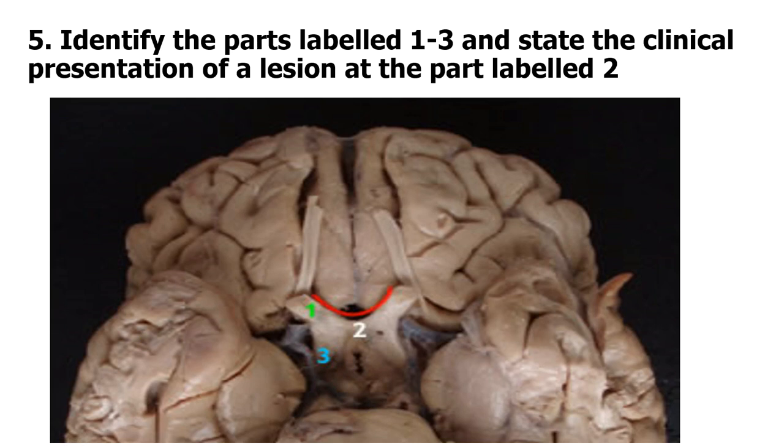And so those medial fibers running the optic nerve are carrying the temporal visual fields. And so if you compress the chiasm, you lose the temporal visual fields from both eyes. So you lose both temporal visual fields. That's why we call it bitemporal hemianopia.